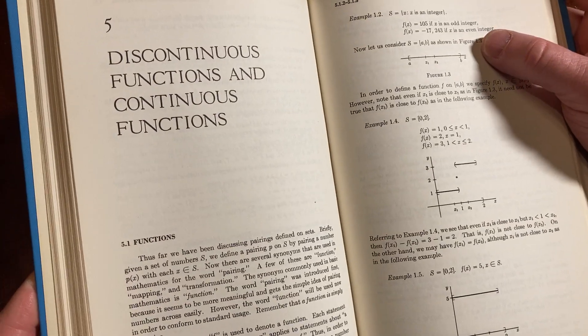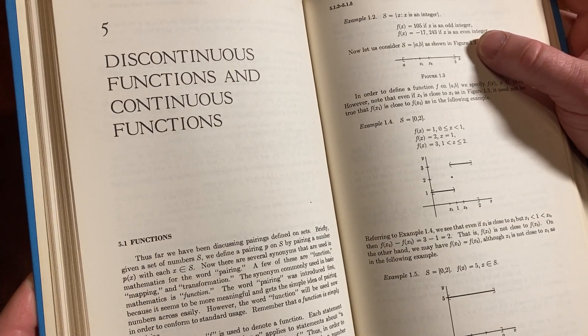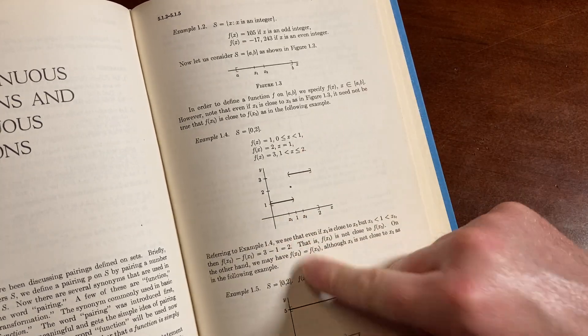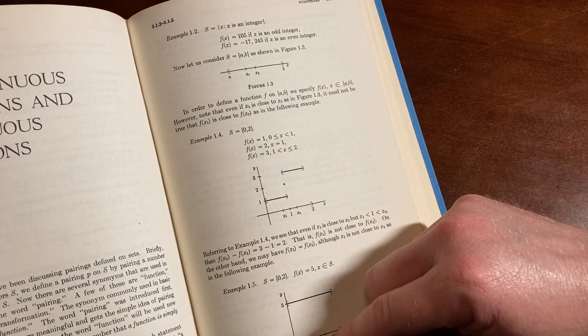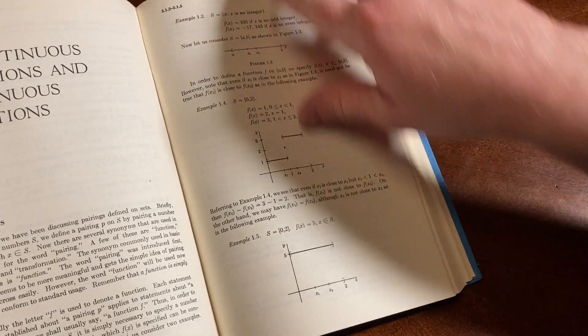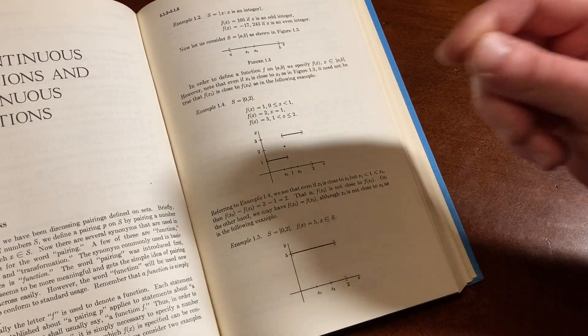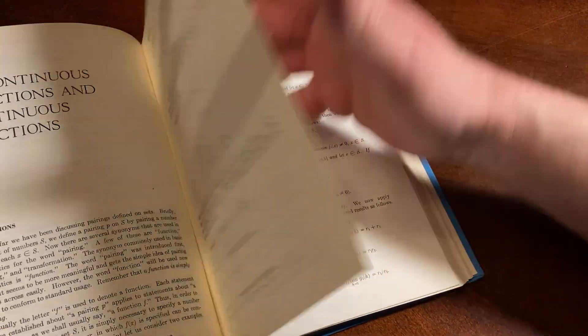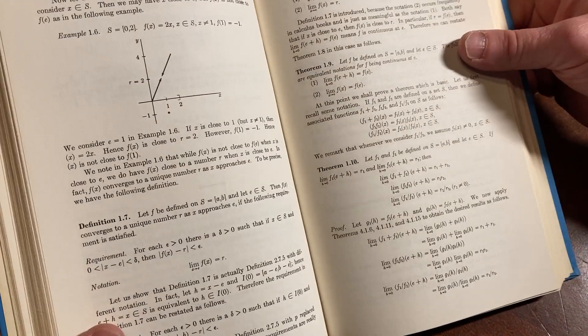Discontinuous functions and continuous functions. Okay. So, they have some examples here. Here's an example of a piecewise function. Okay. That's discontinuous. Yep. It's discontinuous at one. Basically, intuitively, it's continuous if you could take a pencil or a pen and draw it without picking up your pencil. That's the basic idea of what a continuous function looks like.